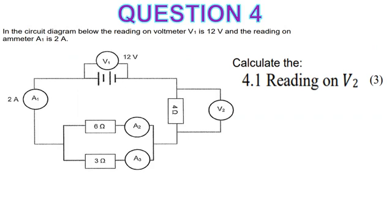From next lesson we are going to start a longer one with 10 multiple choice questions. We'll try to finish one question per lesson. So today we are finishing our first paper. Question four is an electric circuit question, 10 marks, and it's an easy one. We'll try to finish in 10 minutes.